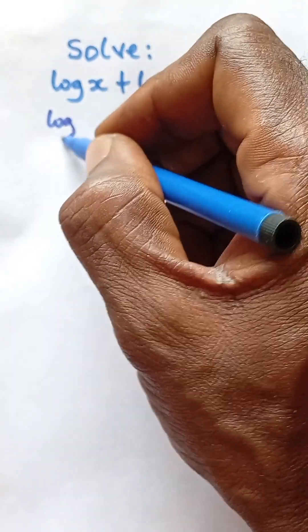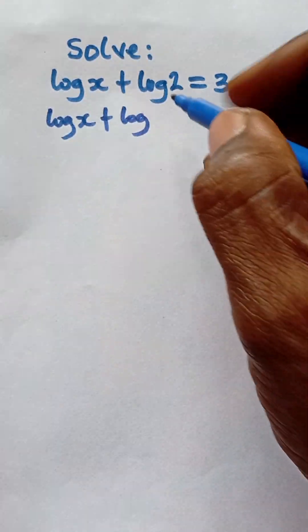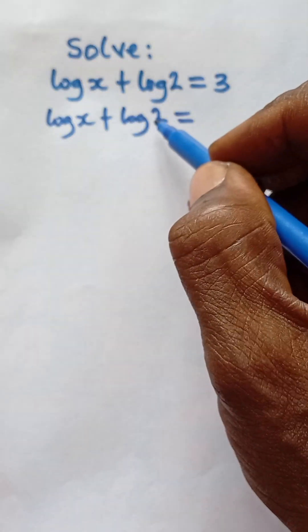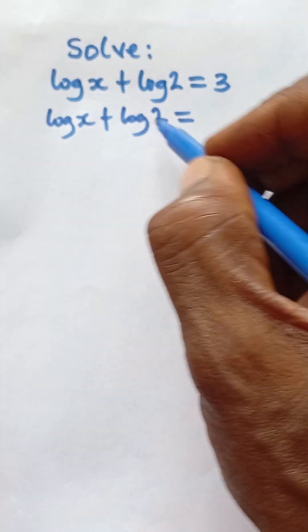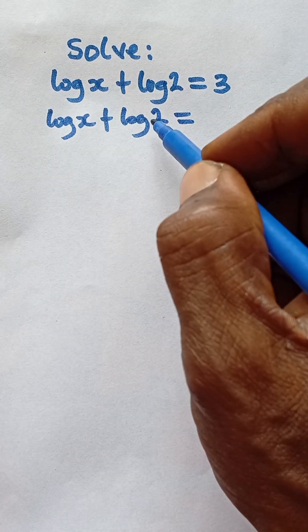This would be log x plus log 2 is equal to... once you see log expressed like this without the base written on it, we should know that generally the log is in base 10. So this log they are in base 10.